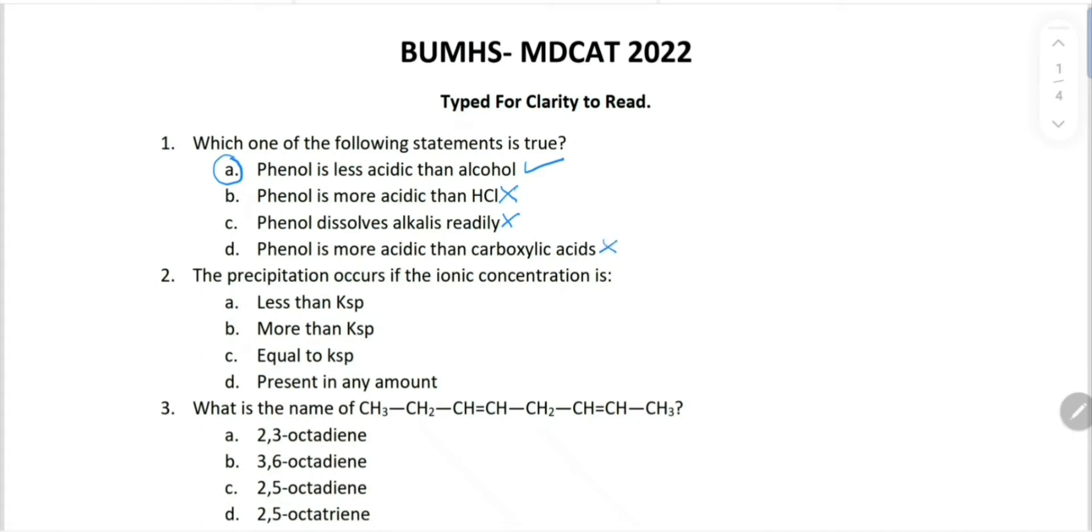Second: the precipitation occurs if the ionic concentration is... if the ionic concentration is greater than Ksp, then precipitation will occur. So more than Ksp solubility product.